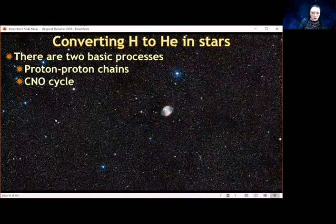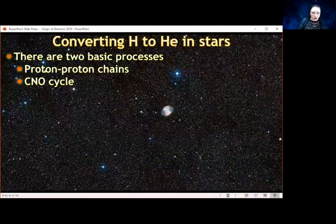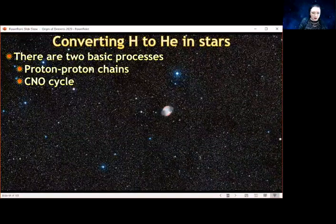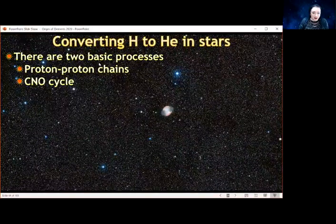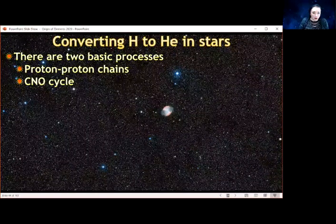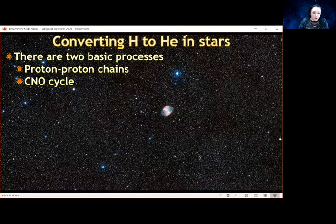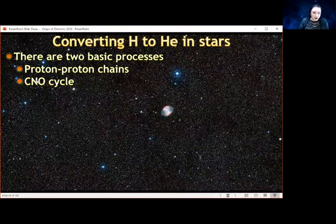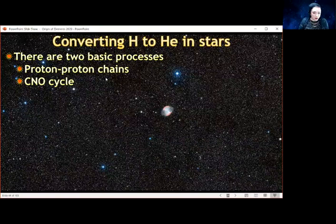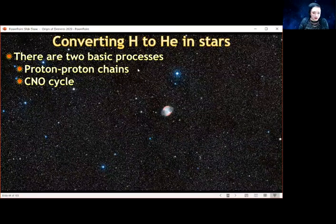There are two basic ways to make helium from hydrogen. The proton-proton chain only needs hydrogen, doesn't need anything else. The CNO cycle requires you to already have some carbon, nitrogen, oxygen. So the earliest stars wouldn't have had any of these nuclei or atoms to play with, so it would have been the proton-proton chains. But now we have the CNO cycle.